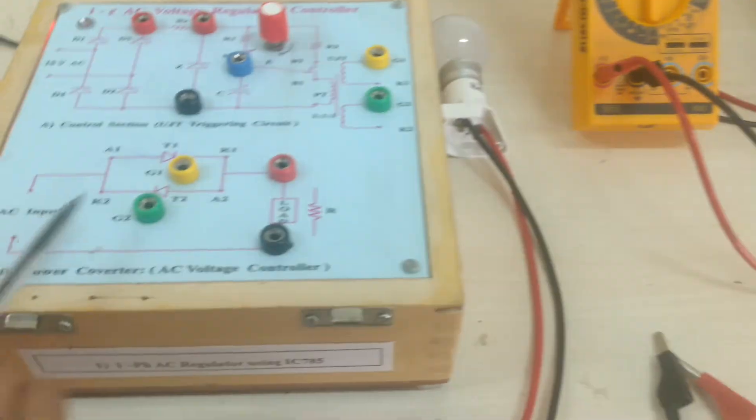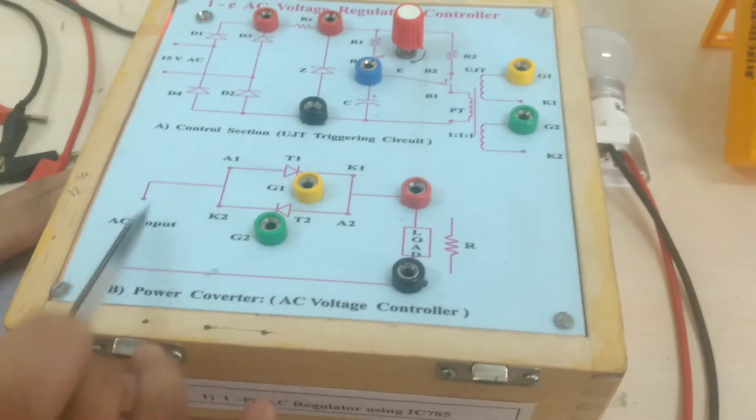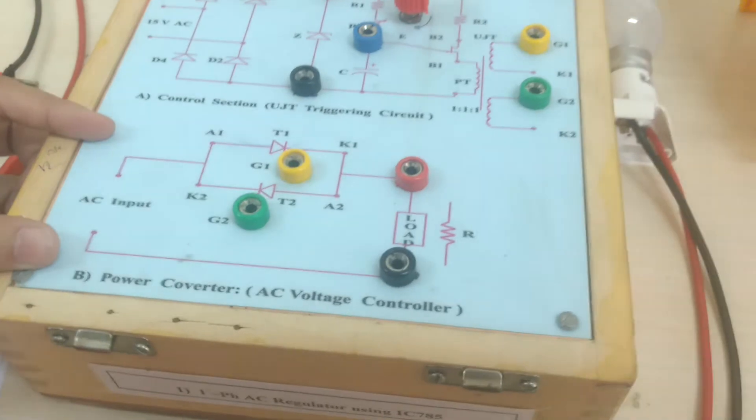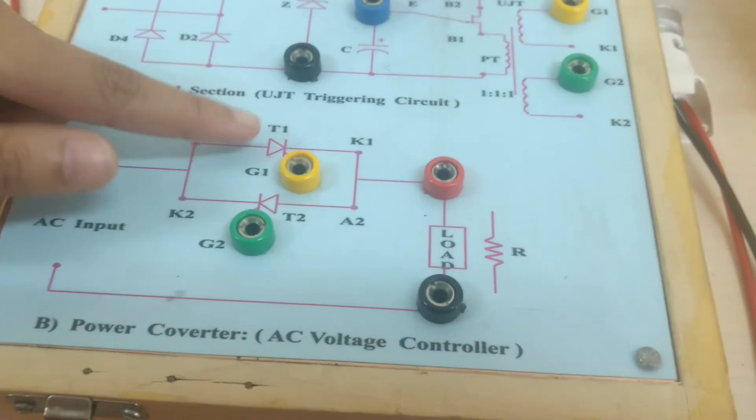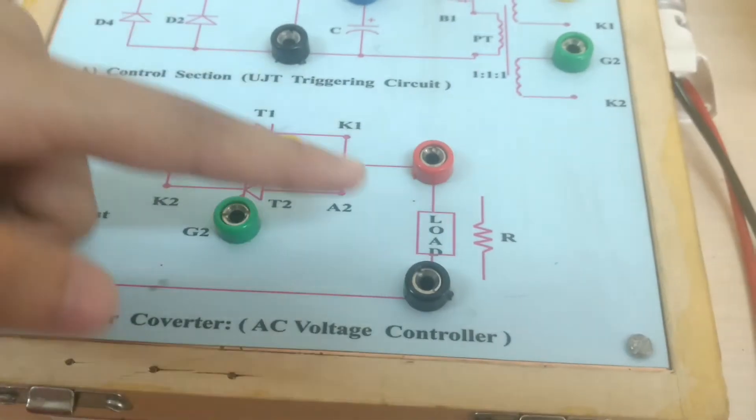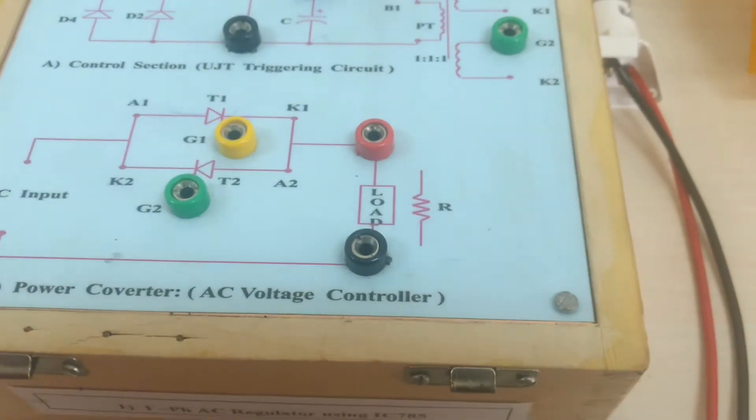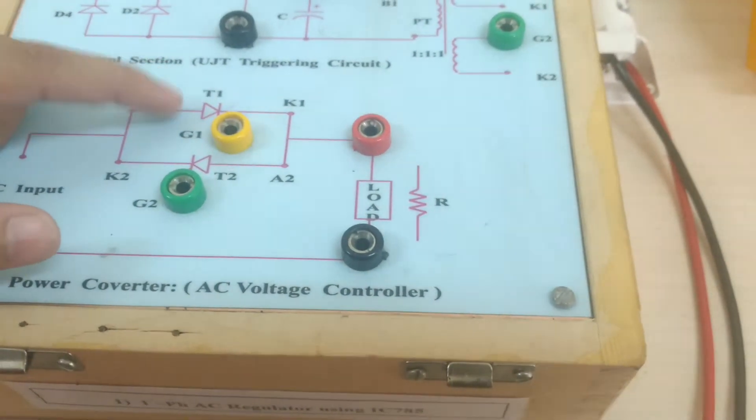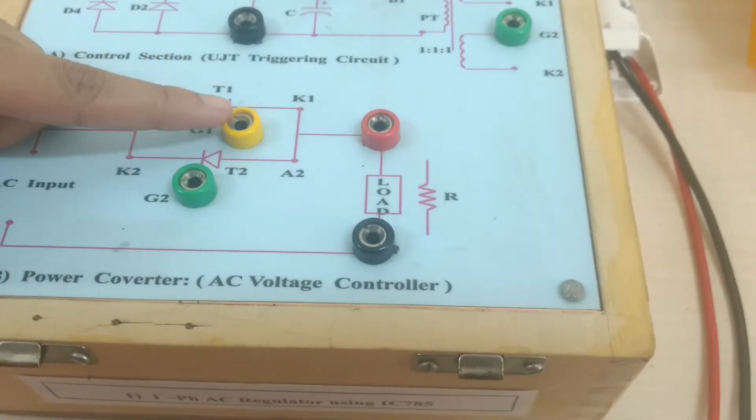Now in this kit, this circuit indicates the voltage regulator circuit in which the two SCRs are connected in antiparallel, and this configuration is connected to the load. To control these SCR1 and SCR2, we need to give the gate signal.